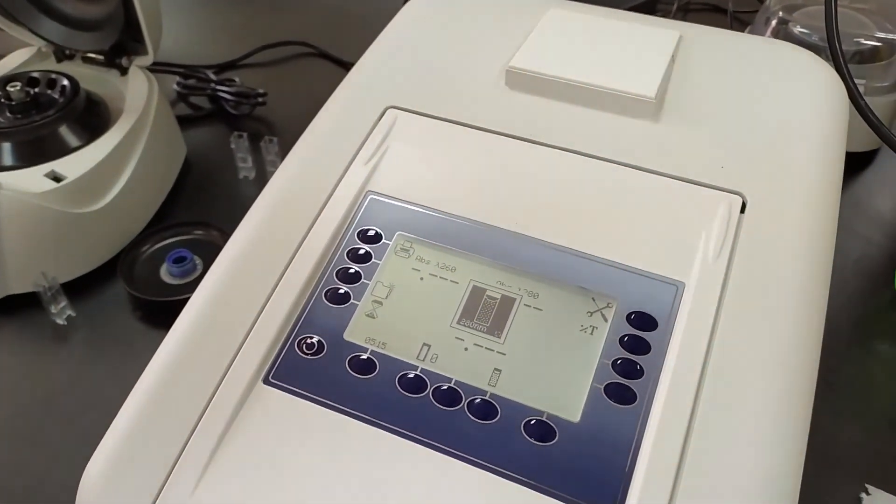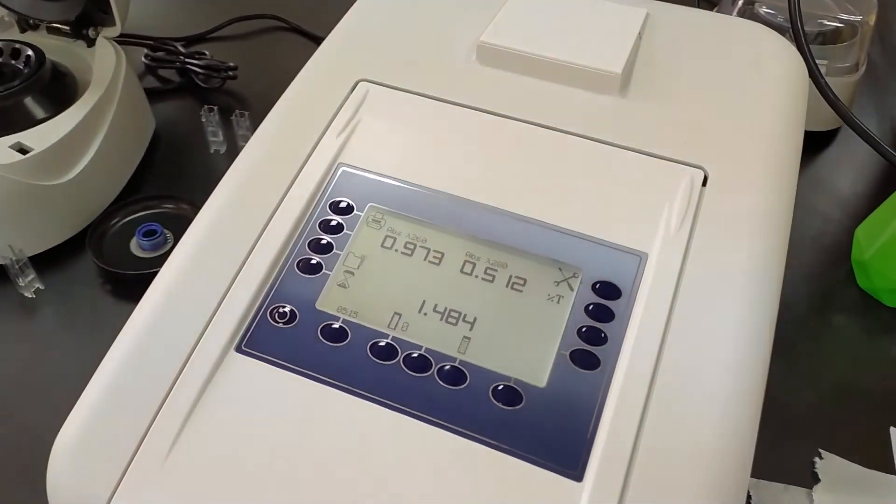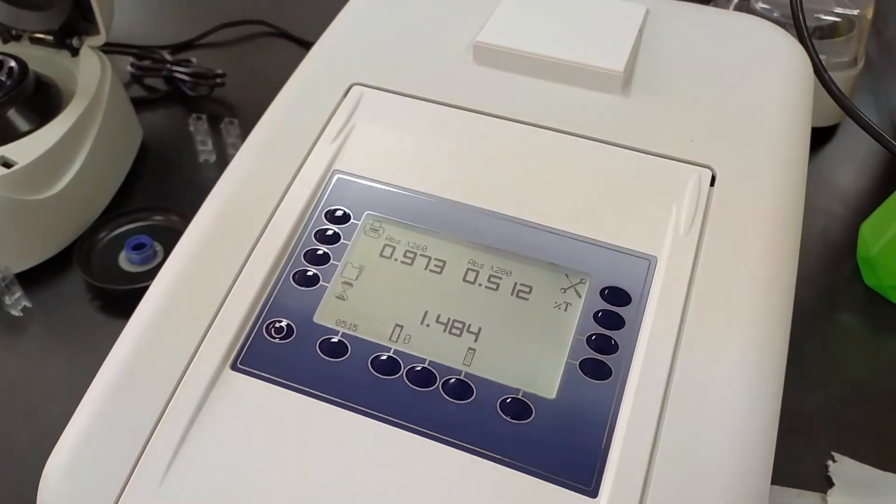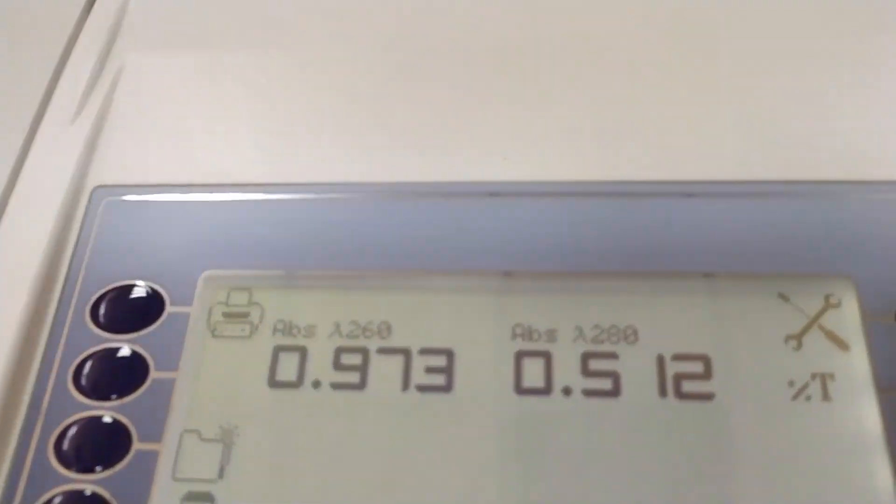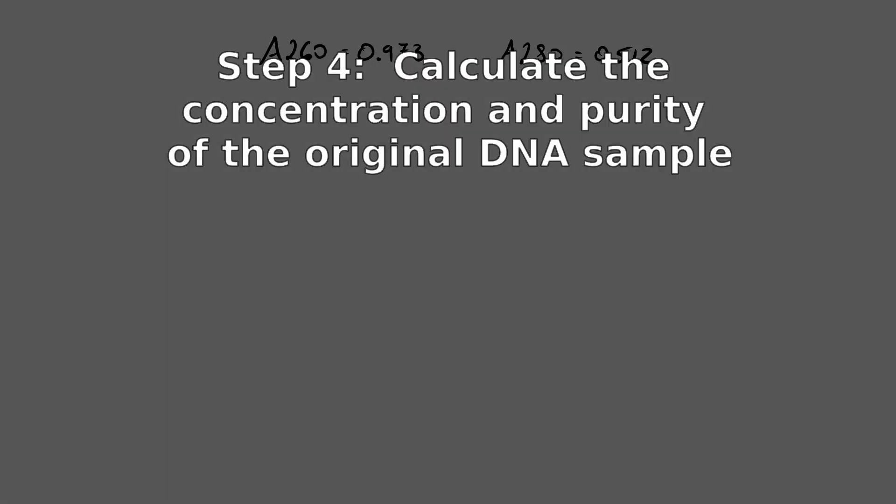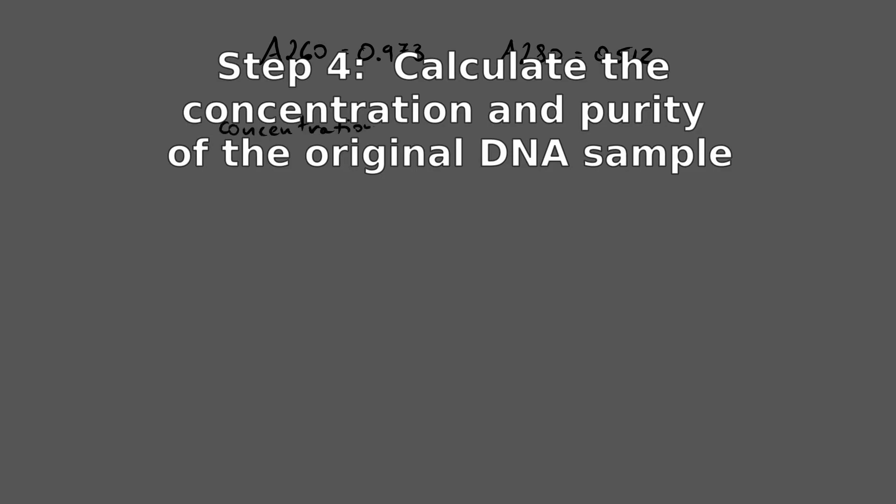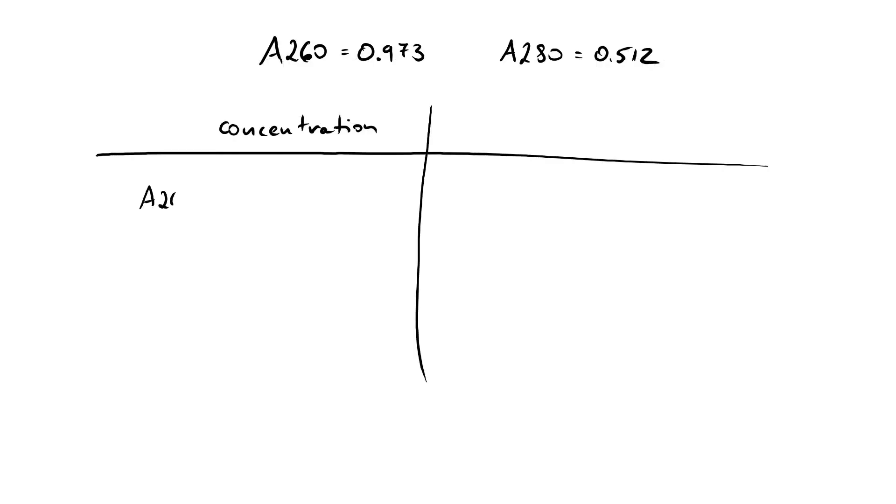Now, the numbers you're interested in are the ones at the top of this readout, which is the absorbance at 260 and the absorbance at 280. Once you have those numbers, you're going to use two different formulas. You're going to calculate the concentration of your sample by taking the absorbance at 260, multiplying that by 50, and then multiplying that by the dilution factor, which in this case is 100. That should give you the concentration of your sample in nanograms per microliter, which you can then easily convert to micrograms per microliter.